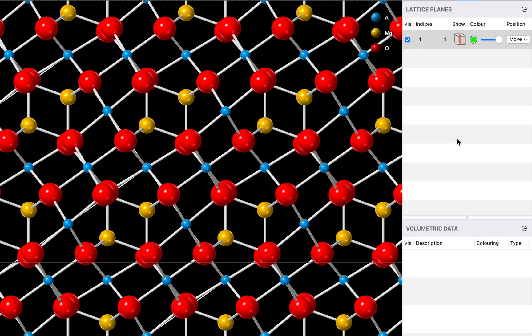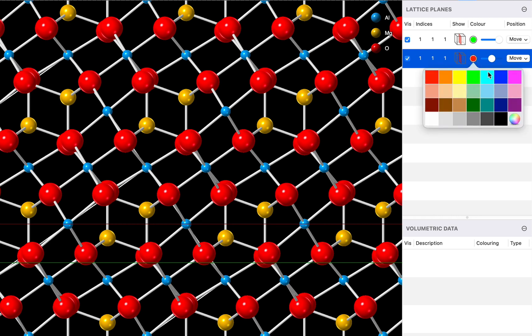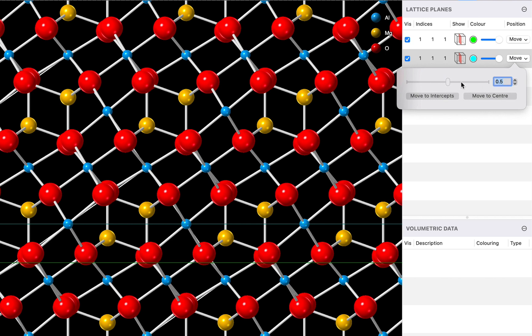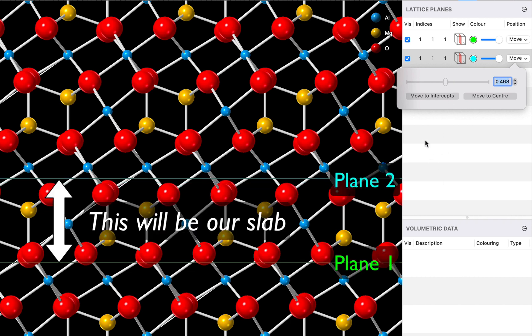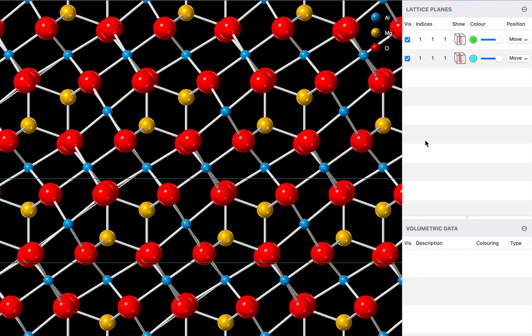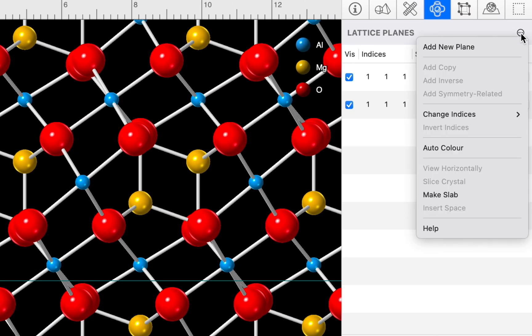We will return to our first lattice plane and use the lattice planes group to add a second. I'll give this a distinct colour and we'll move it into position. We can isolate the resulting slab using the make slab command, which you can find on the transform menu and also on the lattice planes actions menu.